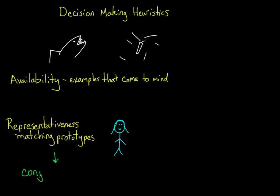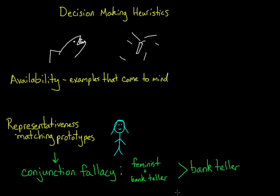However, in this case, it leads us to something called a conjunction fallacy, which is when people think that the co-occurrence of two instances, being a feminist and being a bank teller, is more likely than a single one, just being a bank teller.